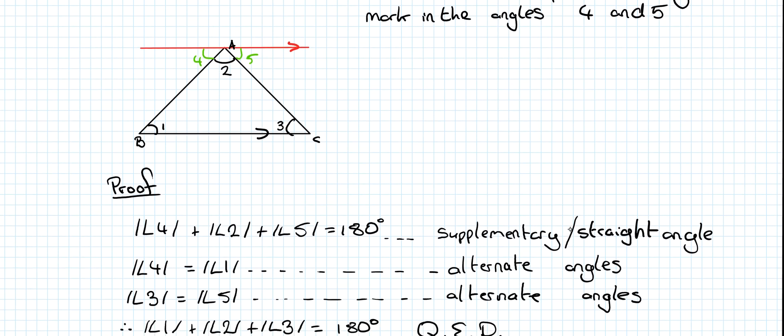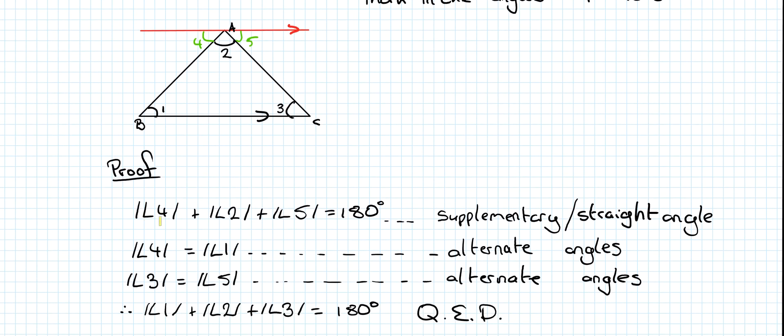Final step then is to replace angle 4 with angle 1. So angle 1 plus angle 2, and replace angle 5 with angle 3. So it's 1 plus 2 plus 3 equals 180 degrees. That's the question done.